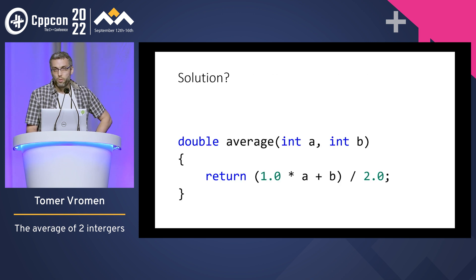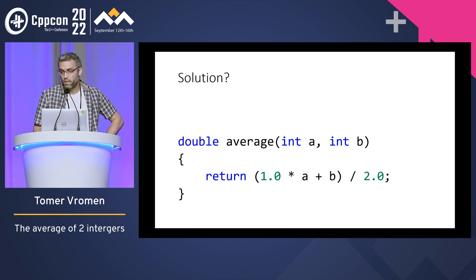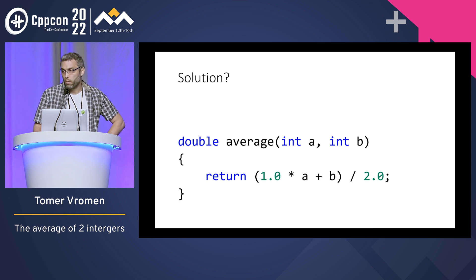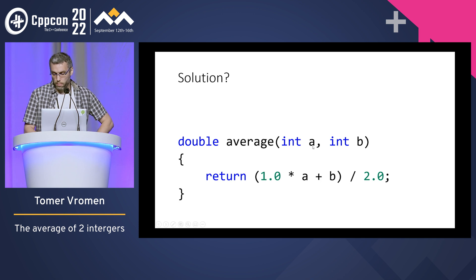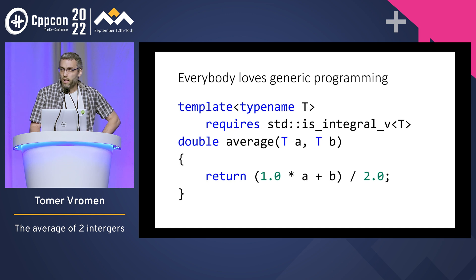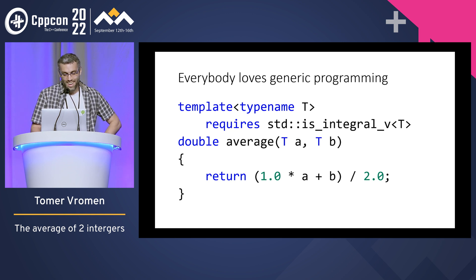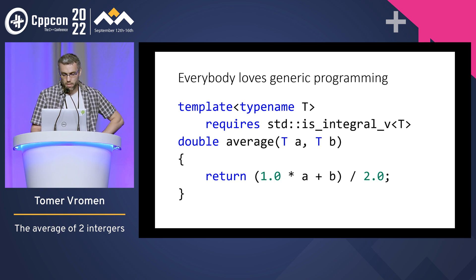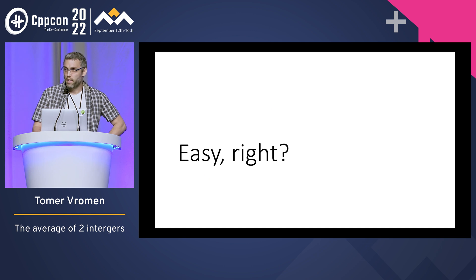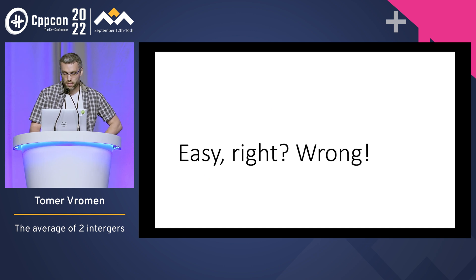Here's a possible solution. Function average gets two integers A and B and returns a double. I'm converting A to a double by multiplying by 1.0 — that's the easiest way — adding B, dividing by 2.0, and that's it. Everyone loves generic programming, right? So let's make it generic: add a type name T, sprinkle in some concepts, and that's it. Easy. Now I have three more minutes.